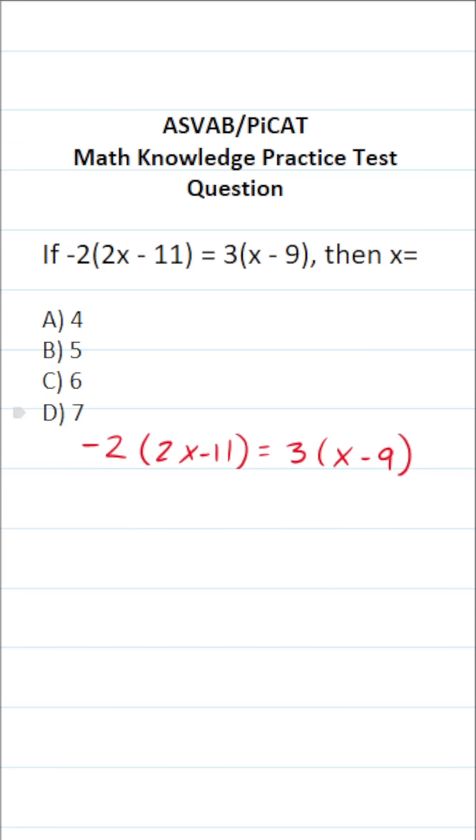In order to solve this one, we first have to take this negative 2 and distribute it here and here, and take this 3 and distribute it here and here.